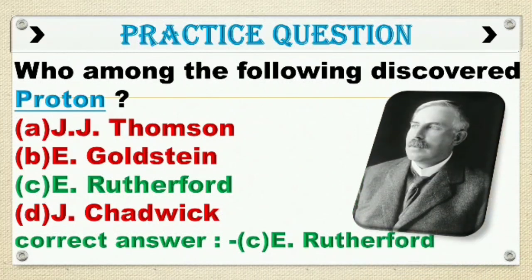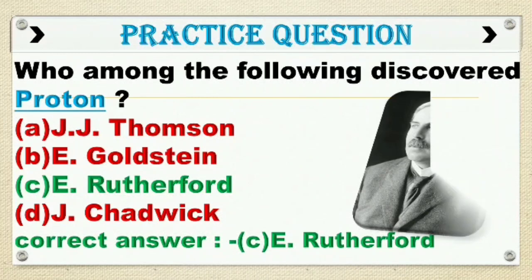Ernest Rutherford. He proved that the hydrogen nucleus, i.e. a proton, is present in the nuclei of all other atoms in the year 1917. He is credited with the discovery of the proton and the atomic nucleus.